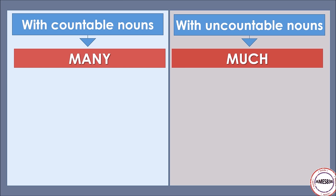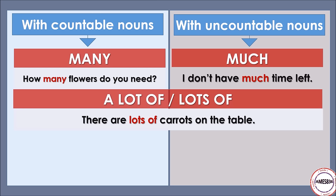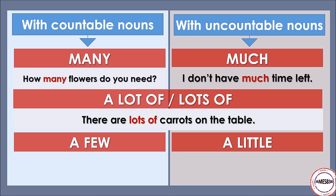We use many with plural countable nouns and much with uncountable nouns, both in interrogative and negative sentences. A lot of and lots of are used with both uncountable nouns and plural countable nouns, and are both mainly used in affirmative sentences.